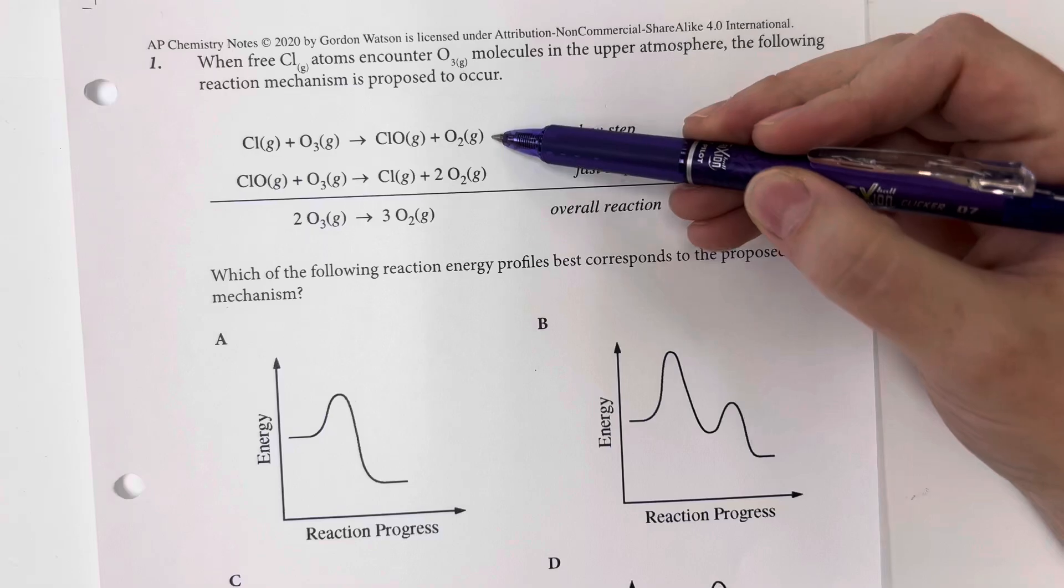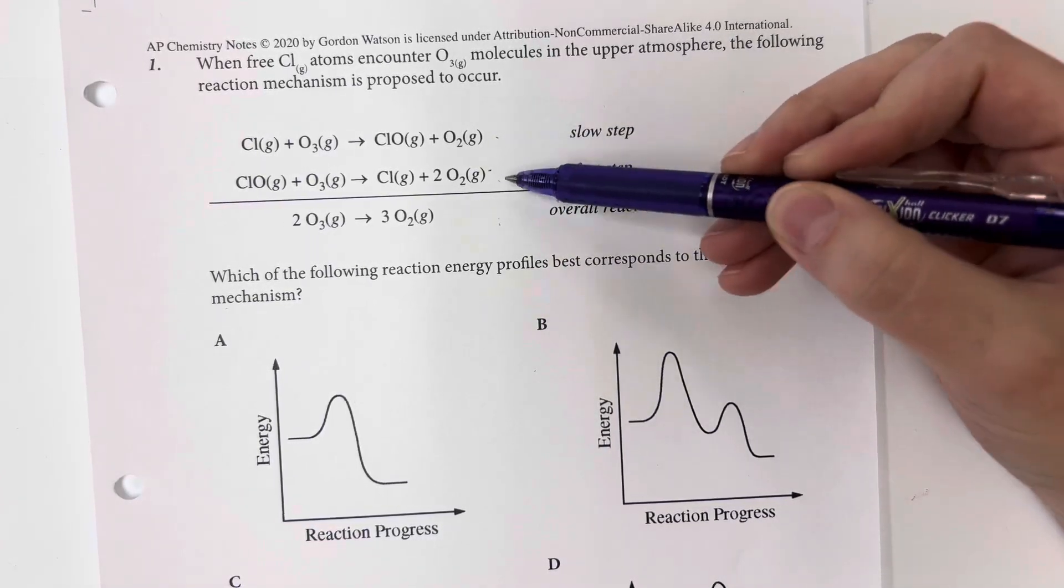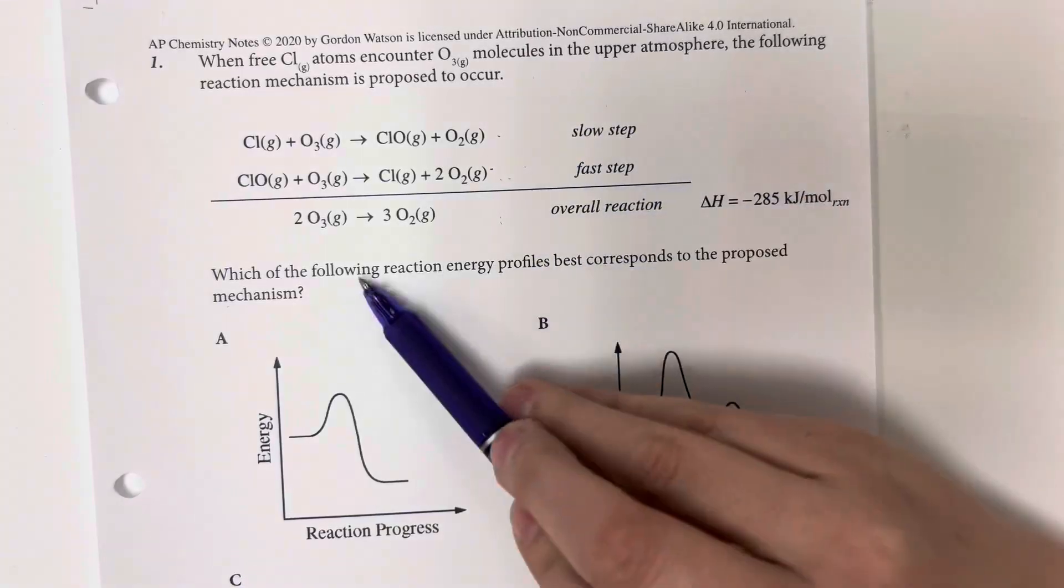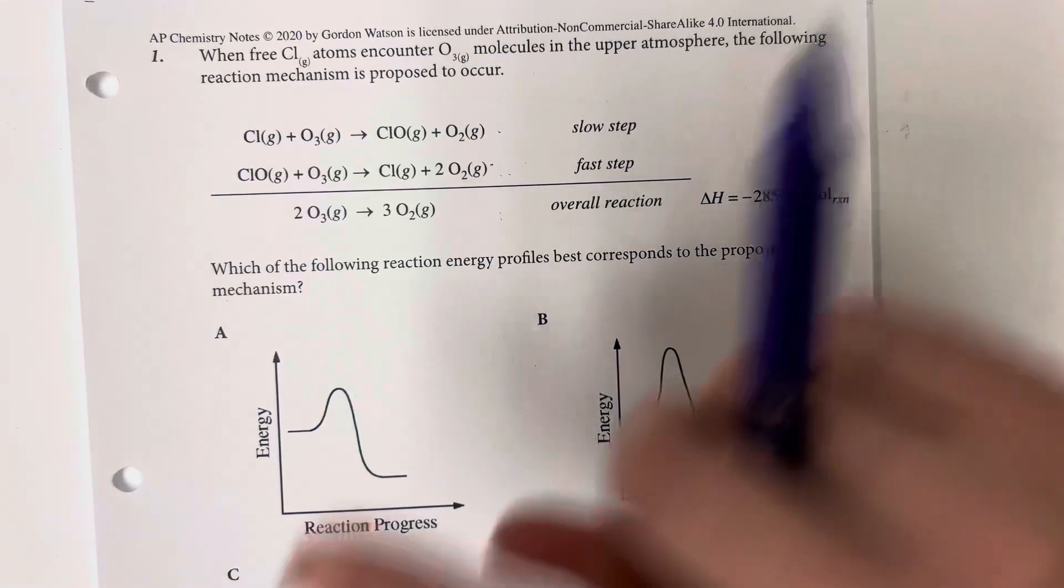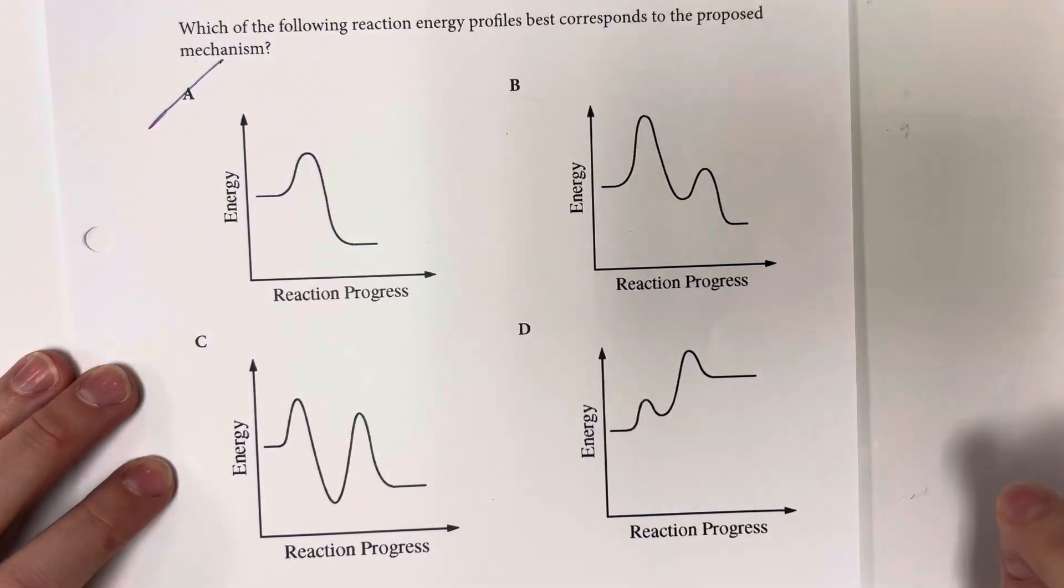So I can see that there are overall two reactions here, and then this is my net reaction. So I should see two bumps present, so I can eliminate A immediately.